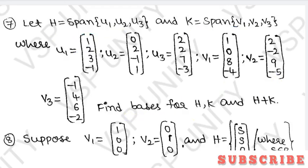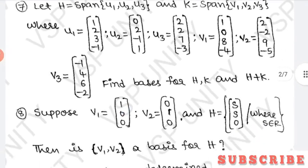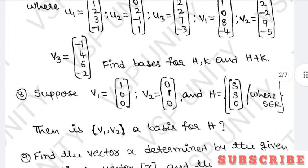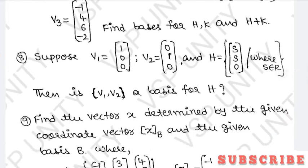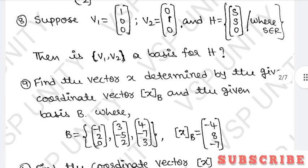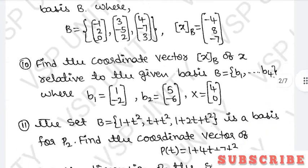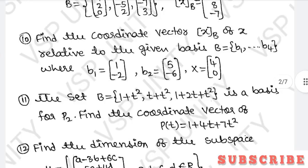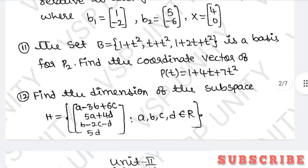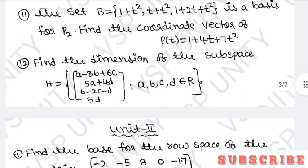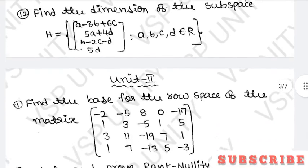We also have to find the basis for H, K, and H plus K. Eighth question: given V1 and V2, find basis for H, and determine if V1, V2 is a basis for H. Ninth question: find the vector x determined by the given coordinate vector xb and given basis B, where B and xb are given. Ninth and tenth questions are the same type. Twelfth question: find the dimension of a given subspace.